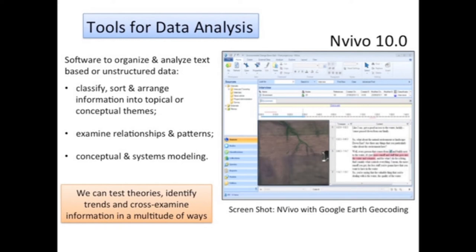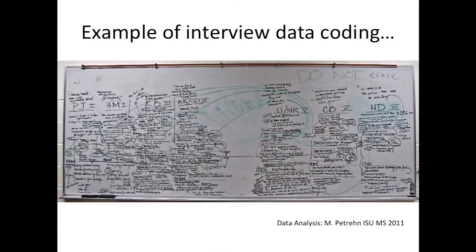NVivo is really useful to classify, sort, and arrange information into different kinds of themes. We can examine relationships, look at patterns, and even link it to biophysical data if we wish — and we will have some biophysical data, so we're going to explore opportunities to do that as well. We can also do conceptual and different kinds of systems modeling using these tools. There are more manual ways of doing this too — one former graduate student commandeered about ten different whiteboards and did it that way, and it was very effective for her.